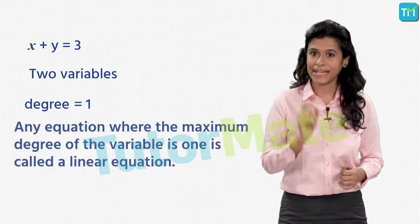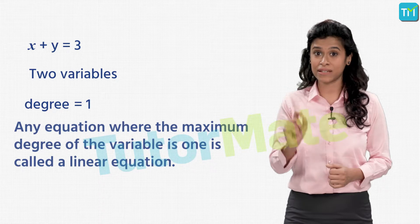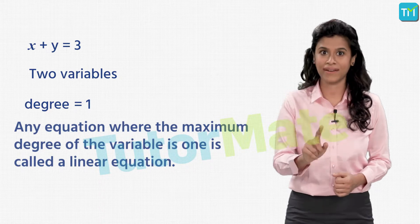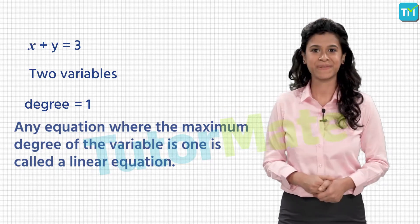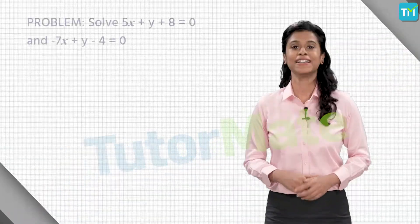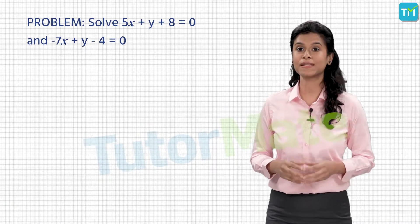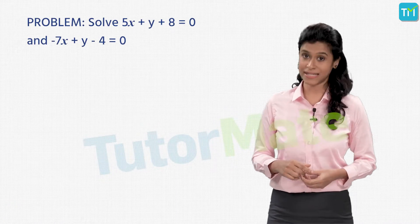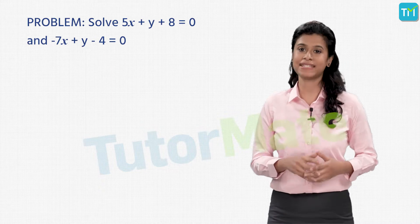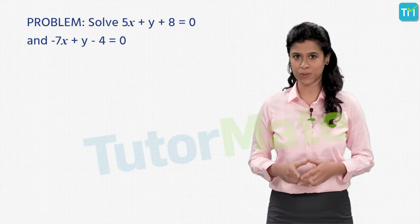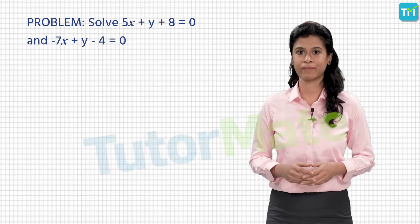Any equation where the maximum degree of the variable is 1 is called a linear equation. Consider the linear equations: 5x plus y plus 8 is equal to 0, and minus 7x plus y minus 4 is equal to 0.